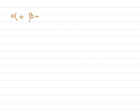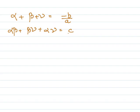To summarize the three relationships: alpha + beta + gamma = -b/a; alpha·beta + beta·gamma + alpha·gamma = c/a; and alpha·beta·gamma = -d/a.